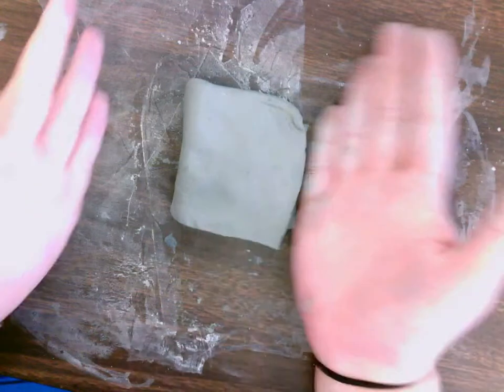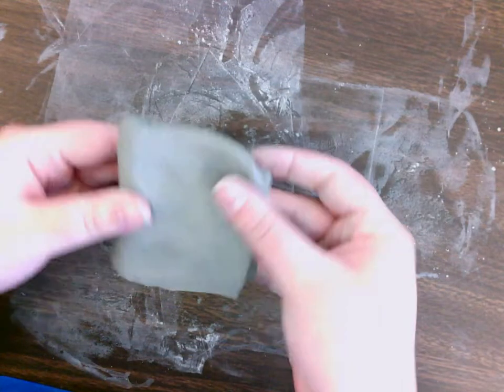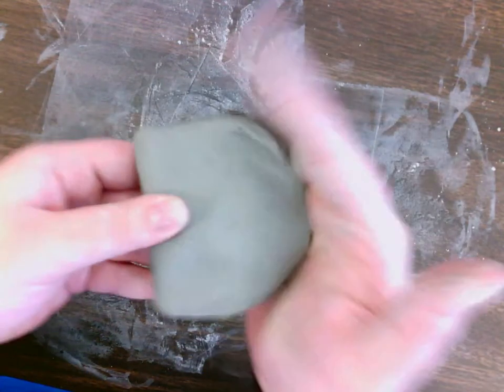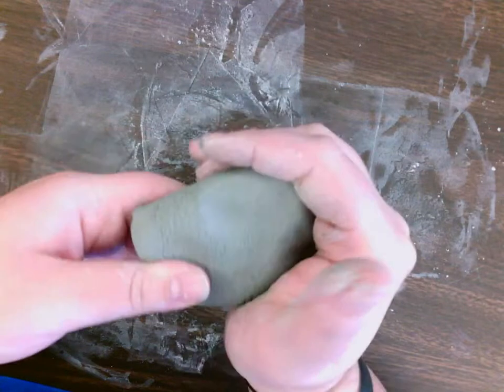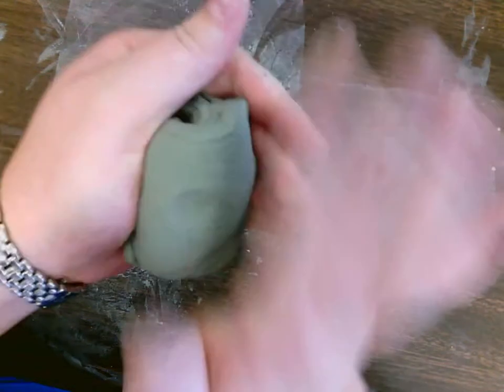So you're gonna get a piece of clay, this is what's called a slab. And what you're gonna do is you're gonna start to kind of round off your corners. So I'm gonna start to round it.